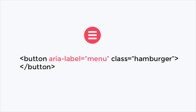For example, here we see a menu icon such as you might see on a website. By adding the ARIA label for menu, people who are sight impaired and people using web accessible technology will know that pressing this button activates the menu.